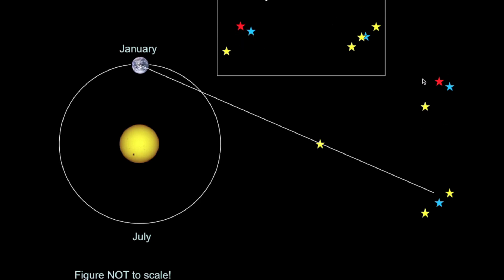And then here's a grouping of a yellow, blue and yellow star right here, but there's an extra star there and that's the nearby one that just appears to be in front of these three from our vantage point in January.